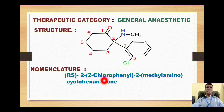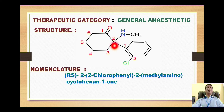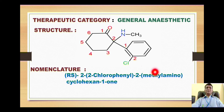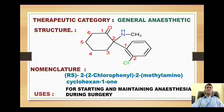Carbon number two of cyclohexanone is attached with four different groups, making it a chiral carbon. Ketamine therefore exists in two isomeric forms: R and S. The therapeutically employed ketamine is the racemic mixture containing both R and S isomers. Ketamine is exclusively used for starting and maintaining anesthesia during surgical procedures.